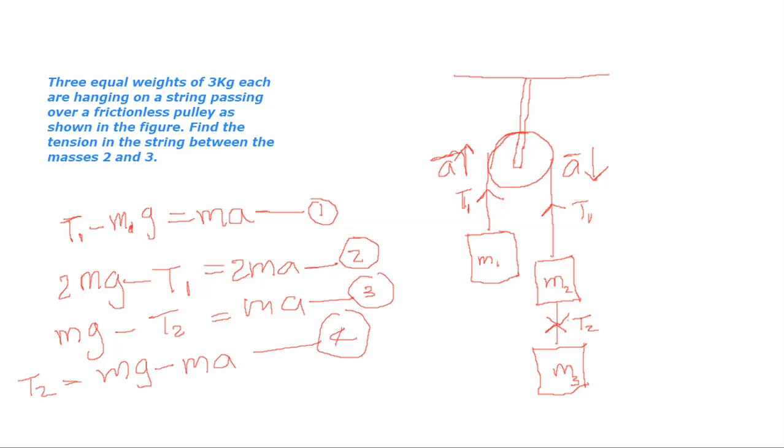If we add equation 1 and 2, what we will get is Mg equals 3MA, or MA equals Mg divided by 3. That is our fifth equation.